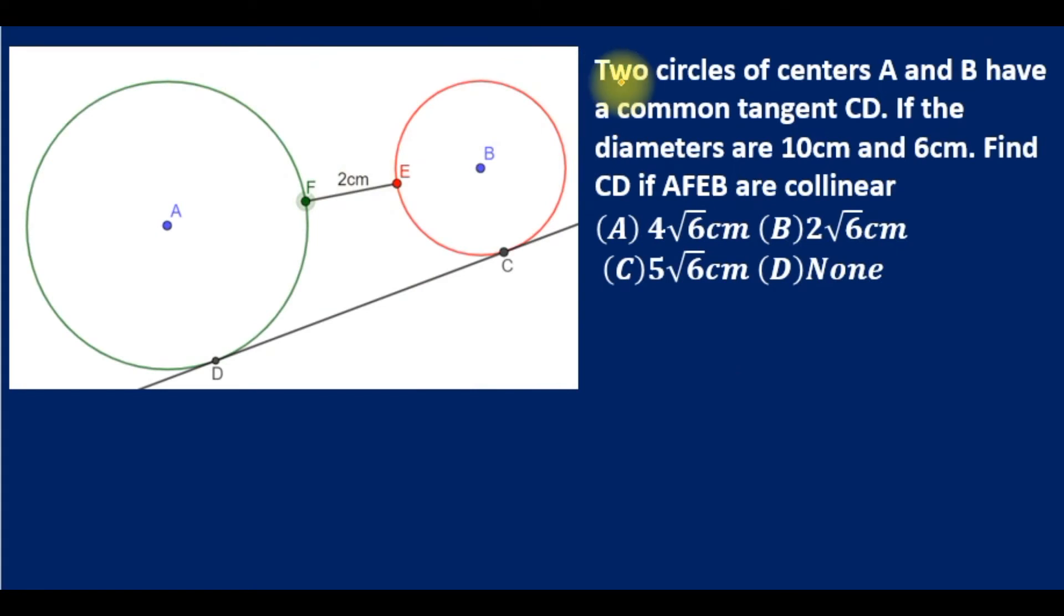Given this question: two circles of centers A and B have a common tangent CD. If the diameters are 10cm and 6cm, find CD if AFEB are collinear. Collinear means on the same line. Let's join the points. Since diameter is 10, radius is 5 for the bigger circle, while the small circle radius is 3.